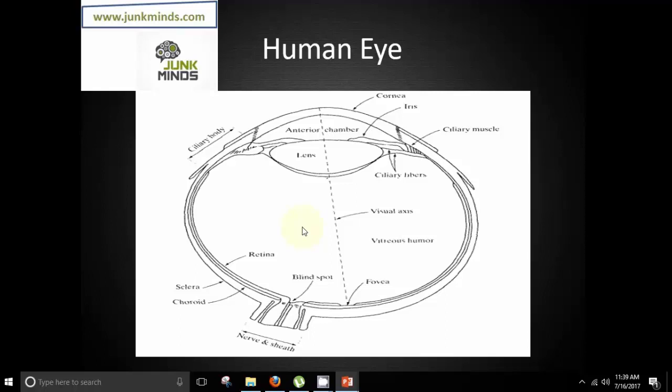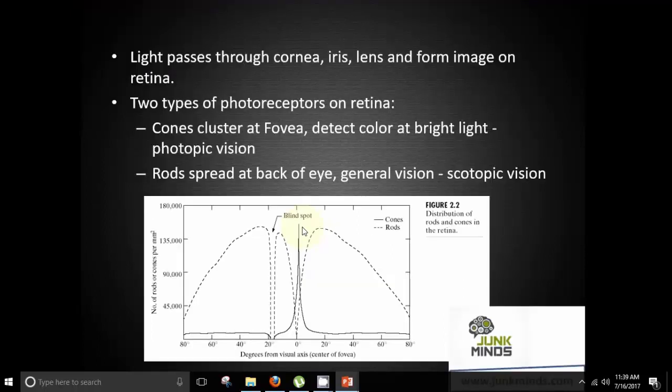So that's all about the human eye. These are the different parts which have a major role to play when any kind of light enters into the eye. Light passes through the cornea, iris, lens and forms image on retina. There are basically two types of photoreceptors on retina. We can say that there is a photopic vision and also a scotopic vision.